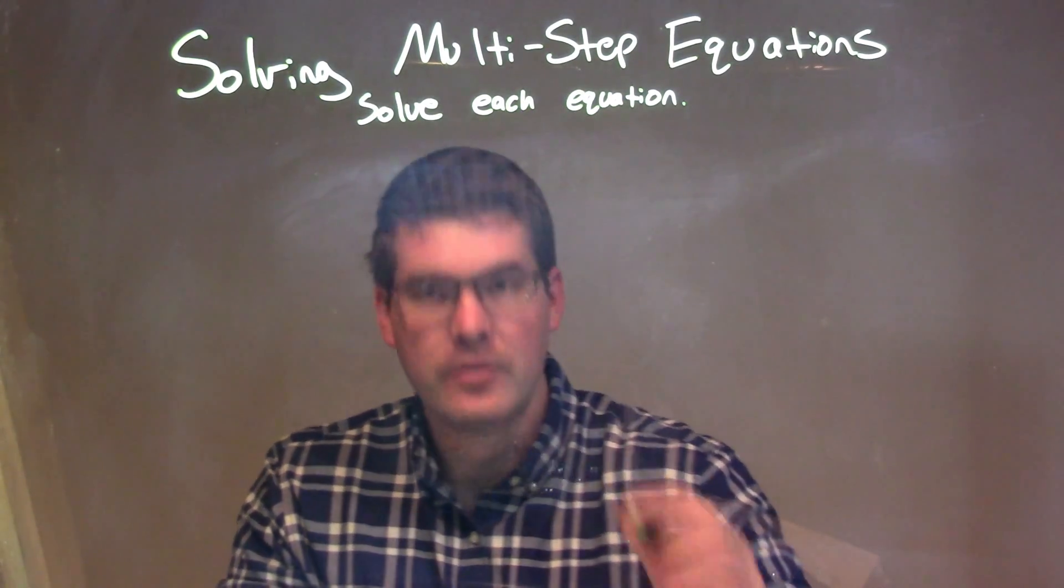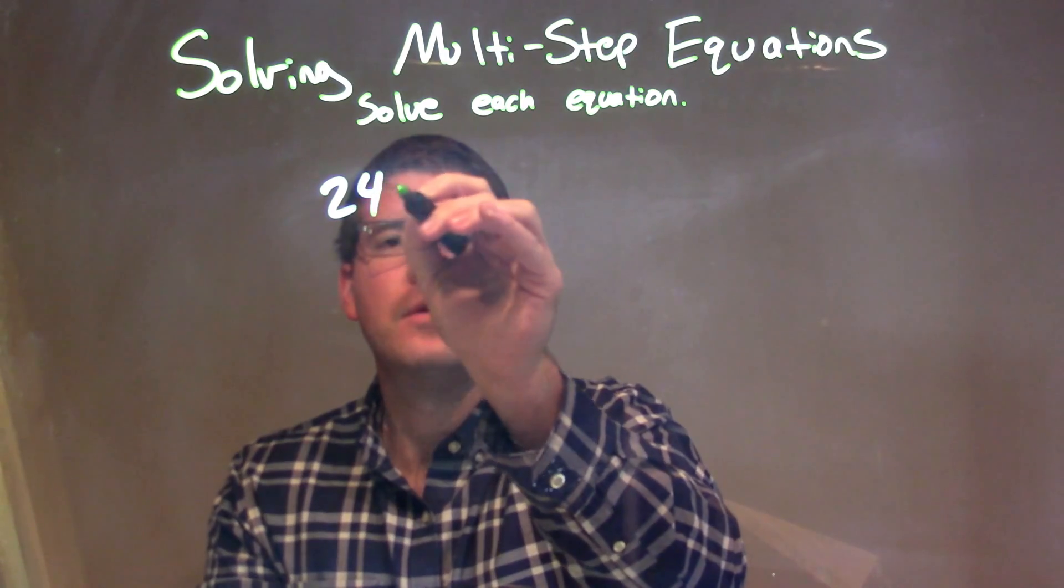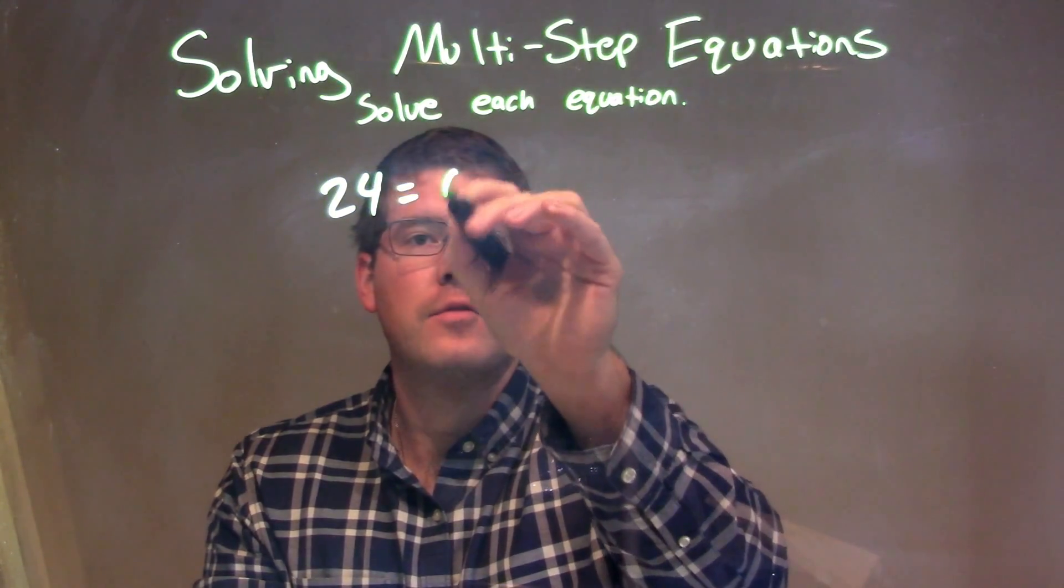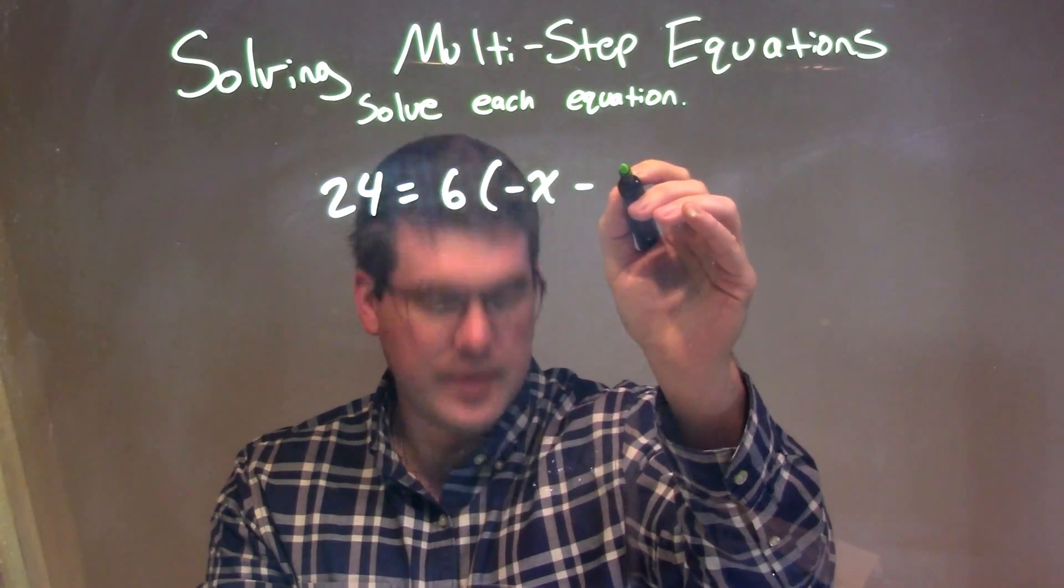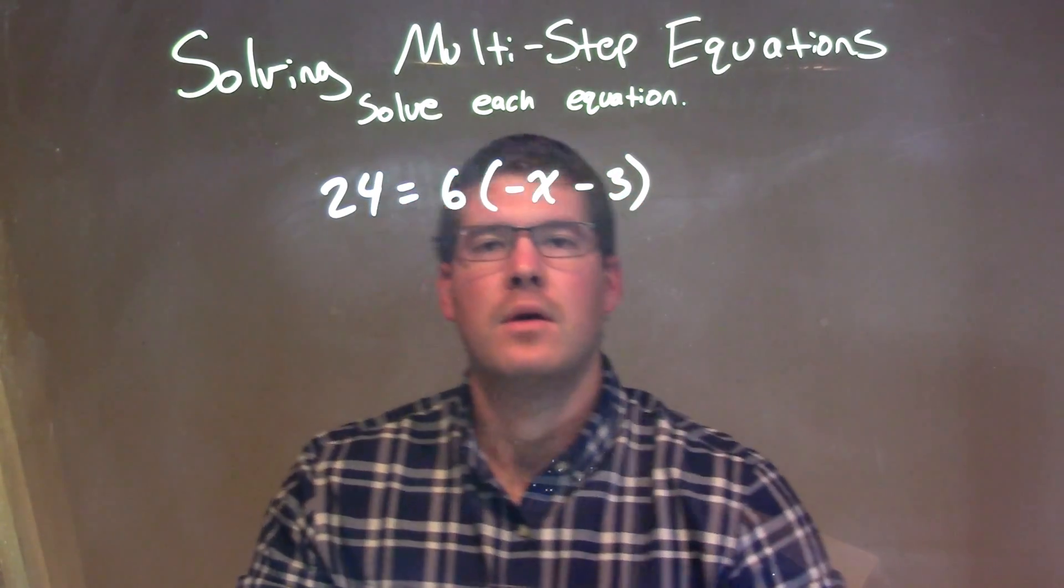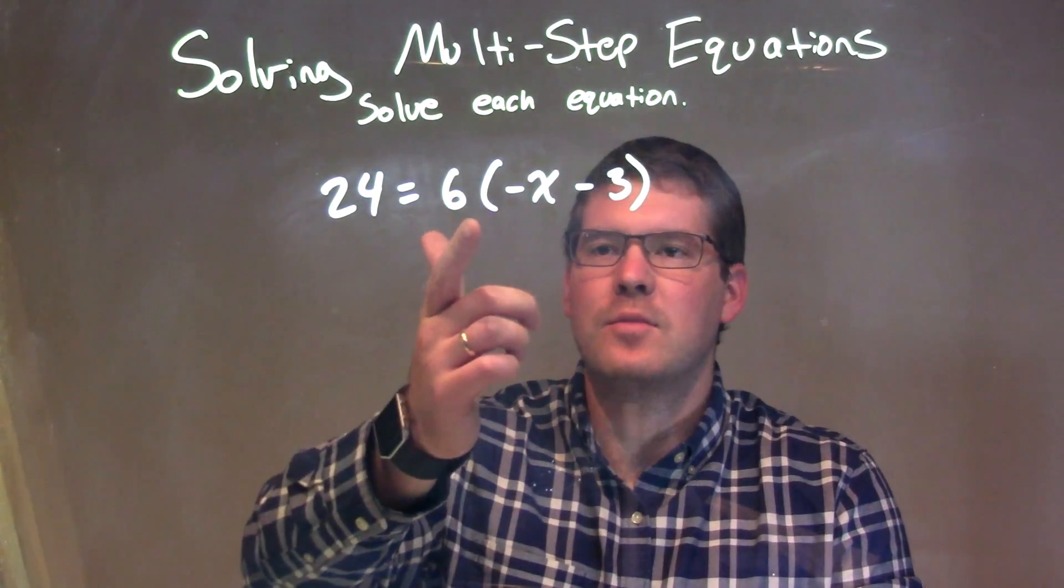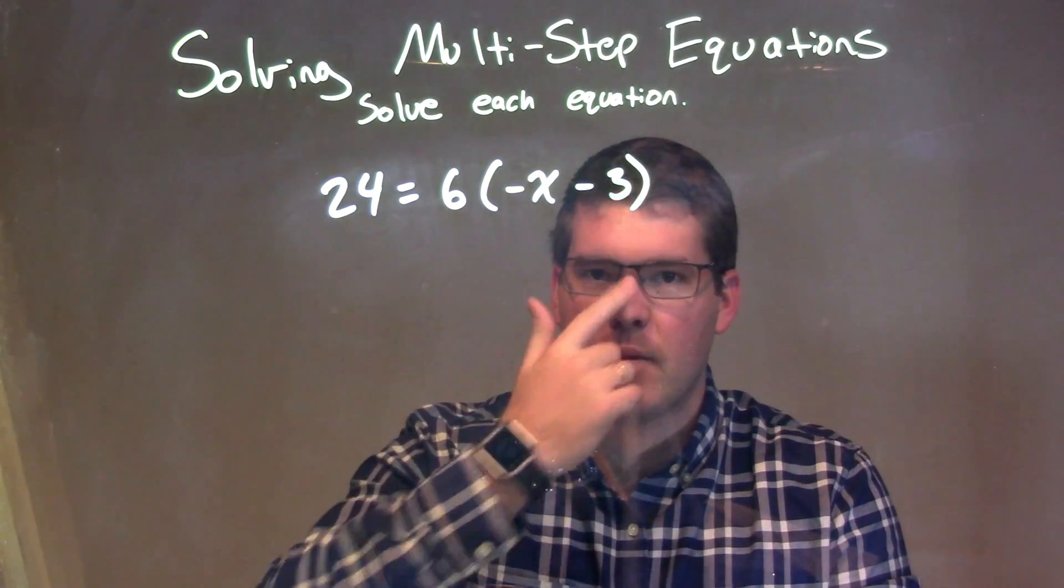So, if I was given this equation, 24 equals 6 times negative x minus 3. Well, what I see here is there's a multiplication between 6 and what's inside the parentheses.